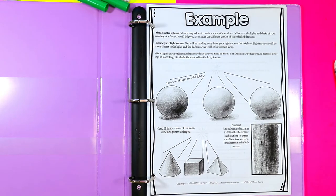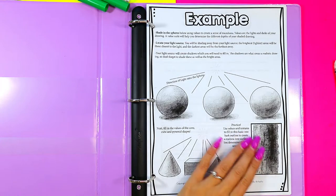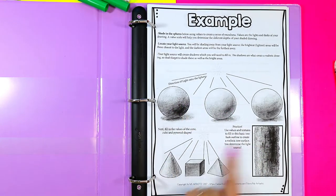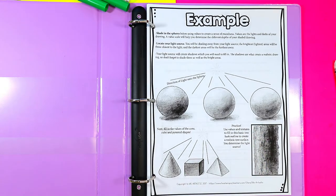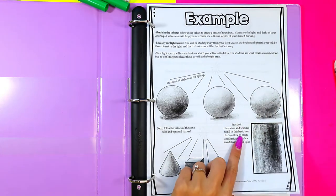So these are just some of the pages in the value booklet. So there's just an example page. Really it's just so you can show kids what shaded in work looks like from one of the pages in this booklet.